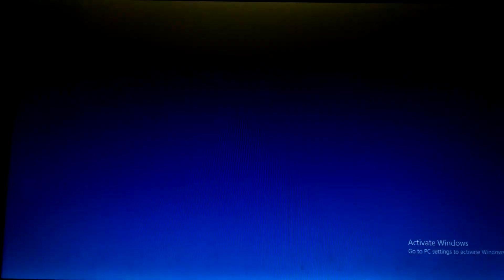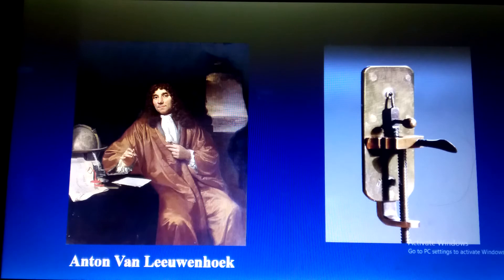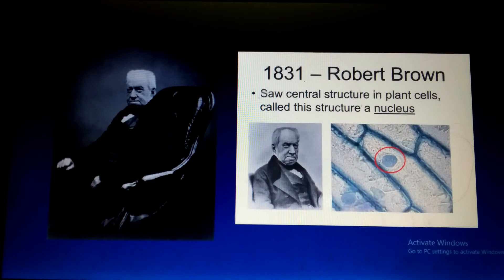After Robert Hooke, there was another famous scientist, Anton van Leeuwenhoek. Van Leeuwenhoek also observed cells under his microscope and confirmed that there is something known as the cell in living organisms. Later, another scientist, Robert Brown, in 1831 observed a central structure in plant cells and called that structure the nucleus.